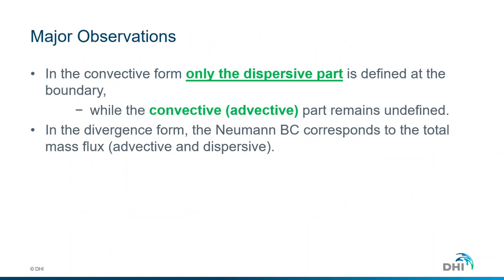Let's wrap up some observations from these two numerical experiments. In the convective form, only the dispersive part is defined under the boundary condition, while the convective — or advective — part remains undefined. This clarifies the main difference in the Neumann BC when we decrease the fluid flux by a factor of 100. In the divergent form, the Neumann BC corresponds to the total mass flux — both advective and dispersive. Therefore, by decreasing the fluid flux in these two experiments, we didn't see any effect on the mass flux recorded through the mass rate budget panel.